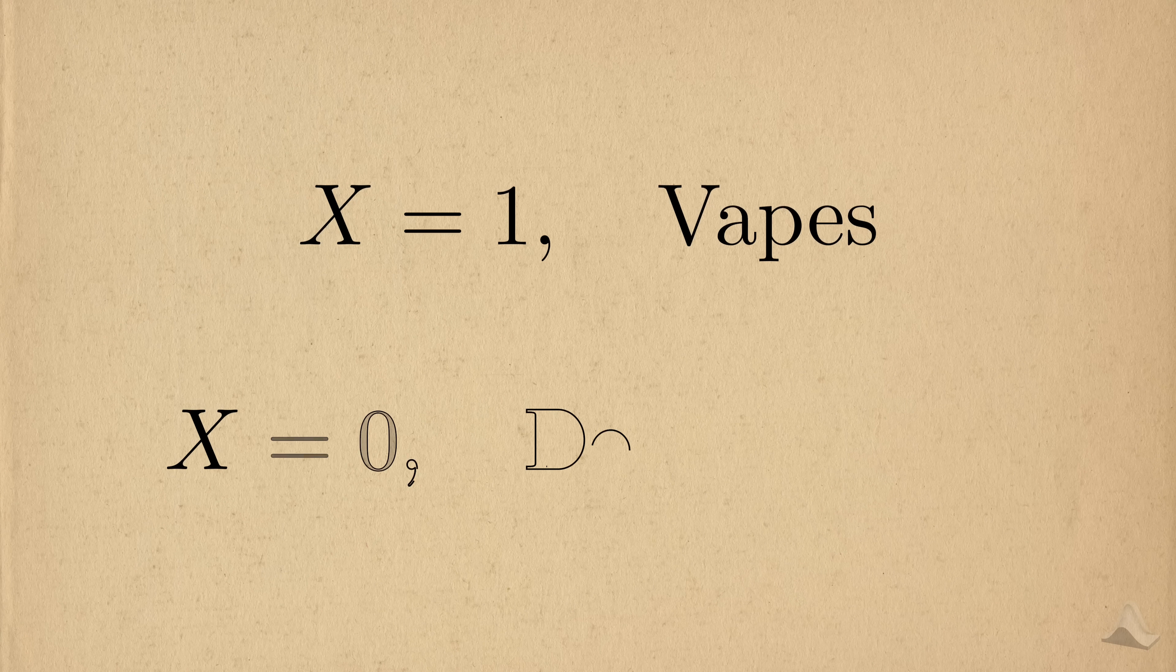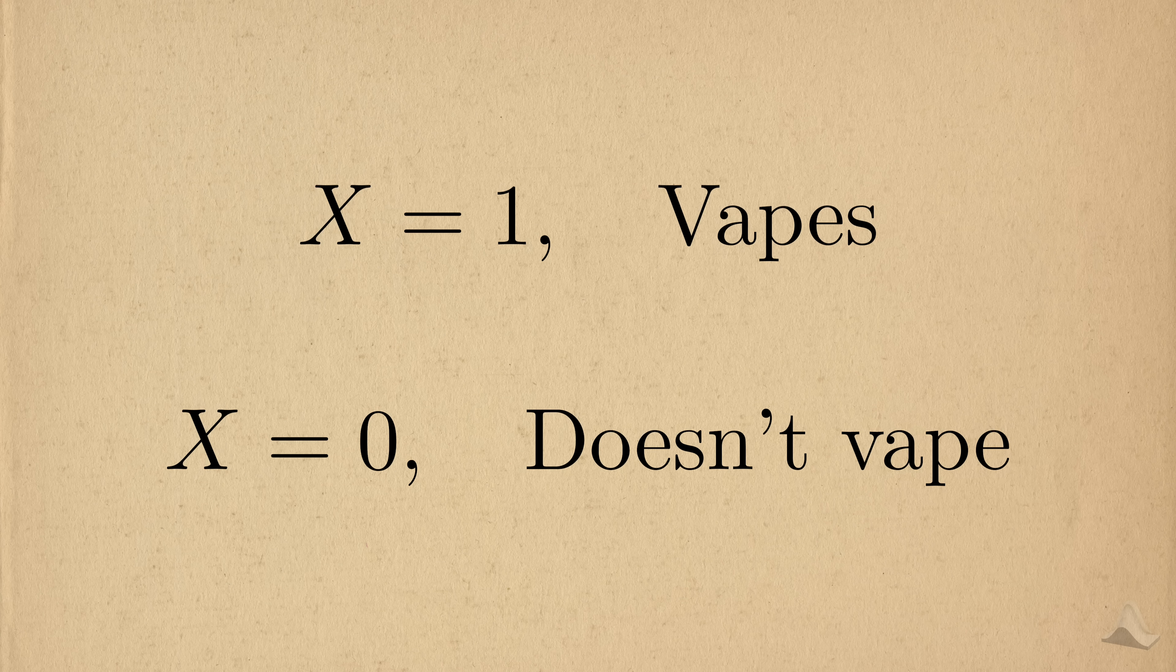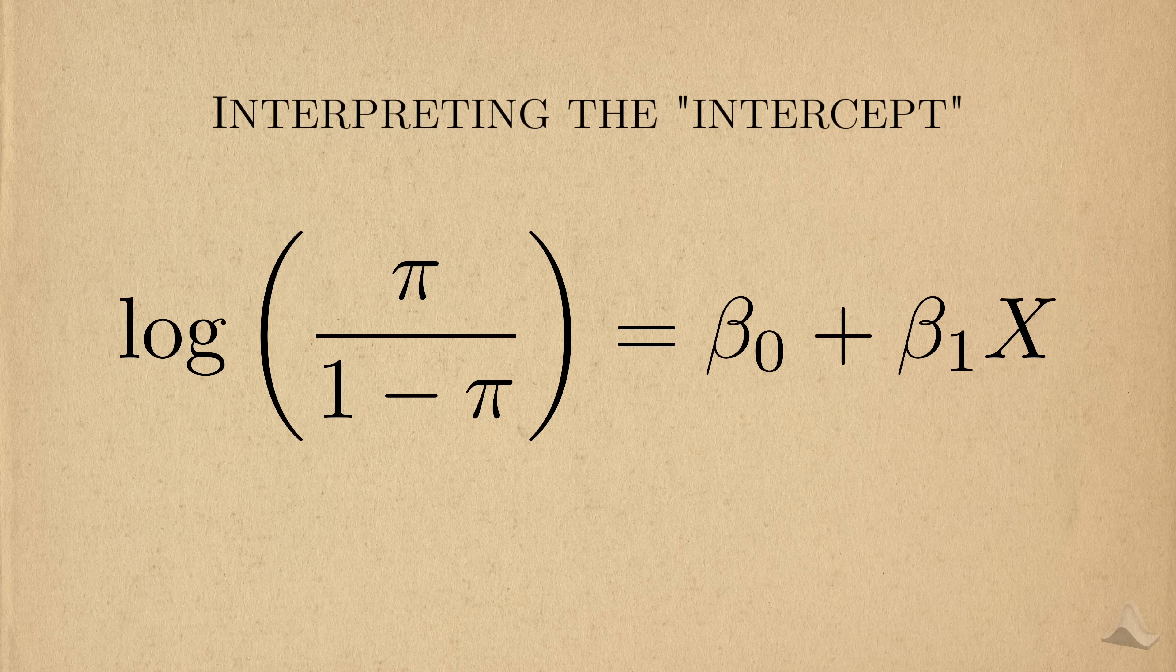For our purposes, we'll think of vaping as a binary variable. 1 if you vape, we get it, and 0 if you don't. With this in mind, we can interpret the different elements of the logistic regression model.